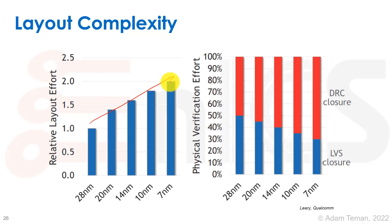Interestingly, LVS has actually become less of a problem, or at least it remains constant. What is really hard is the DRC closure, because we have tons and tons of DRCs which are really hard to understand, and sometimes you don't even see them until you rise to a higher level of hierarchy. There's not much you can do — layout really becomes something that is very hard to deal with in these dense technologies.